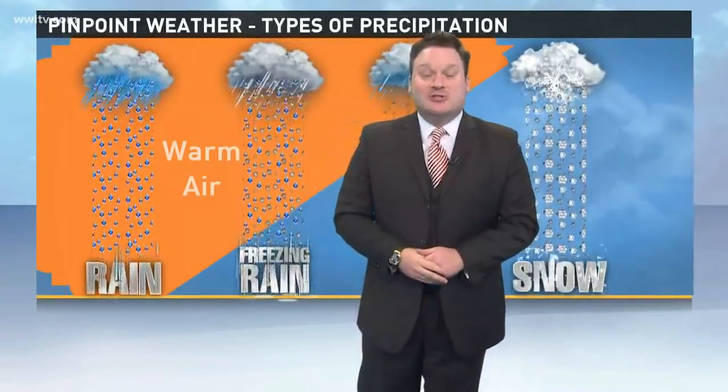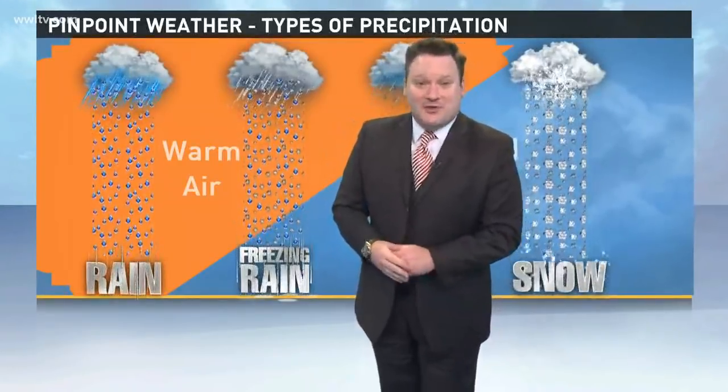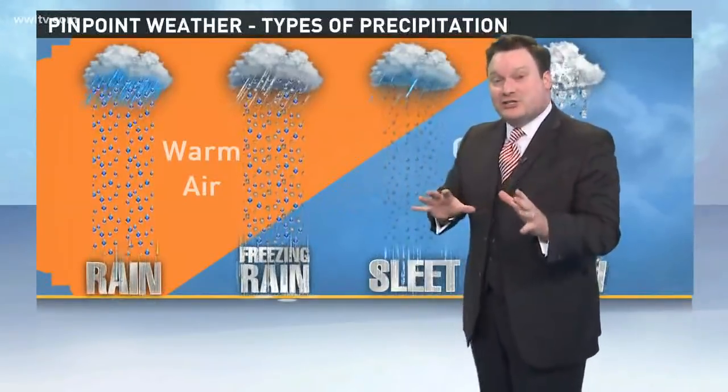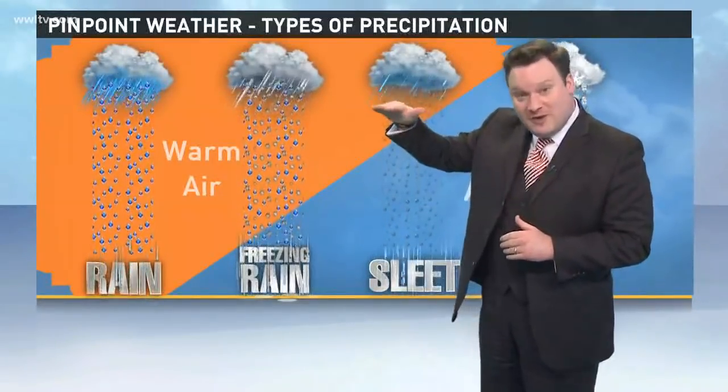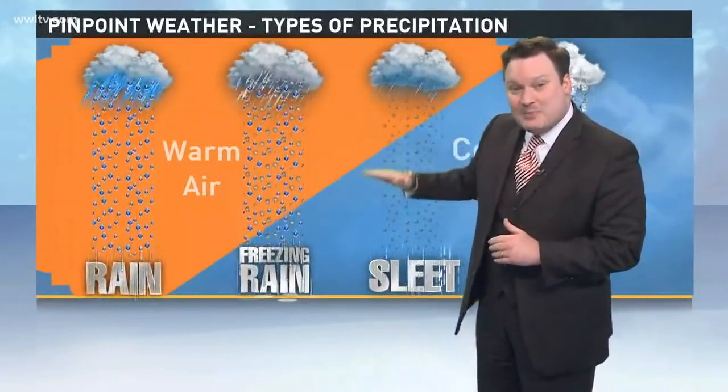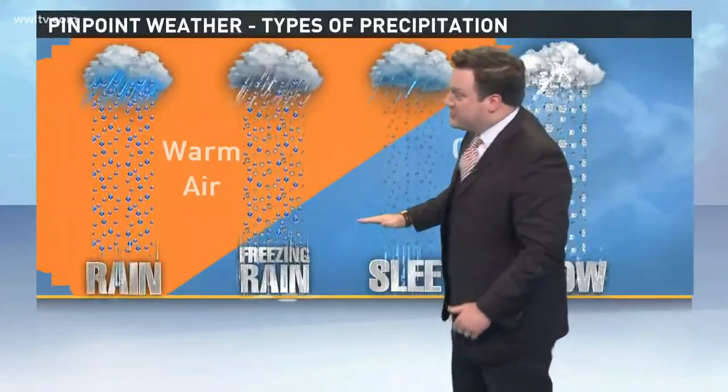When we're looking at the potential for some wintry weather — rain, sleet, snow — what's the difference? Well, it all has to do with temperatures aloft, meaning high up in the atmosphere, and down at the surface.